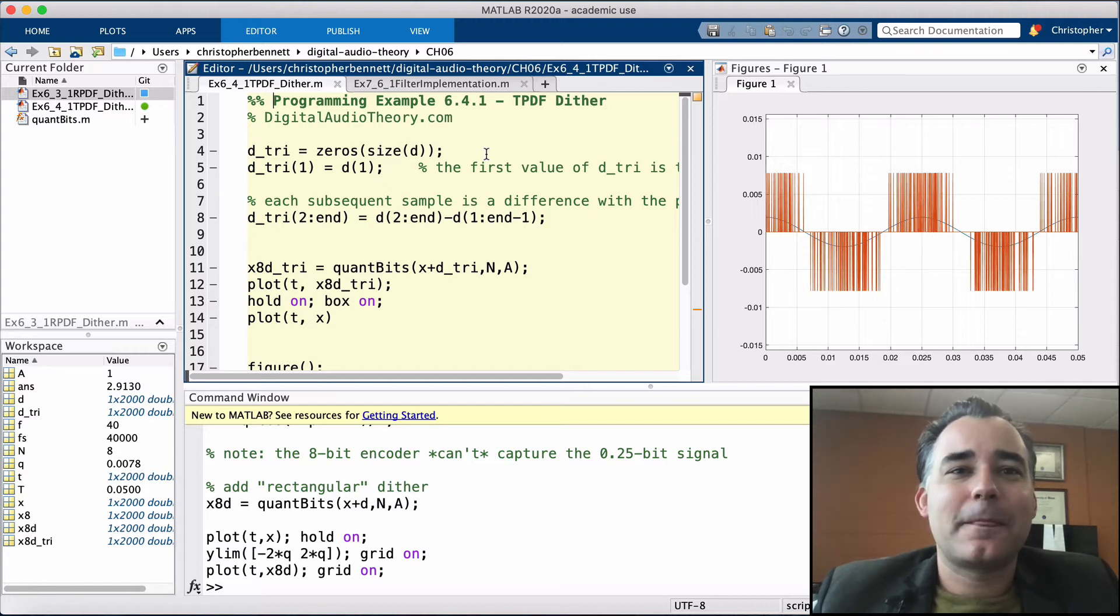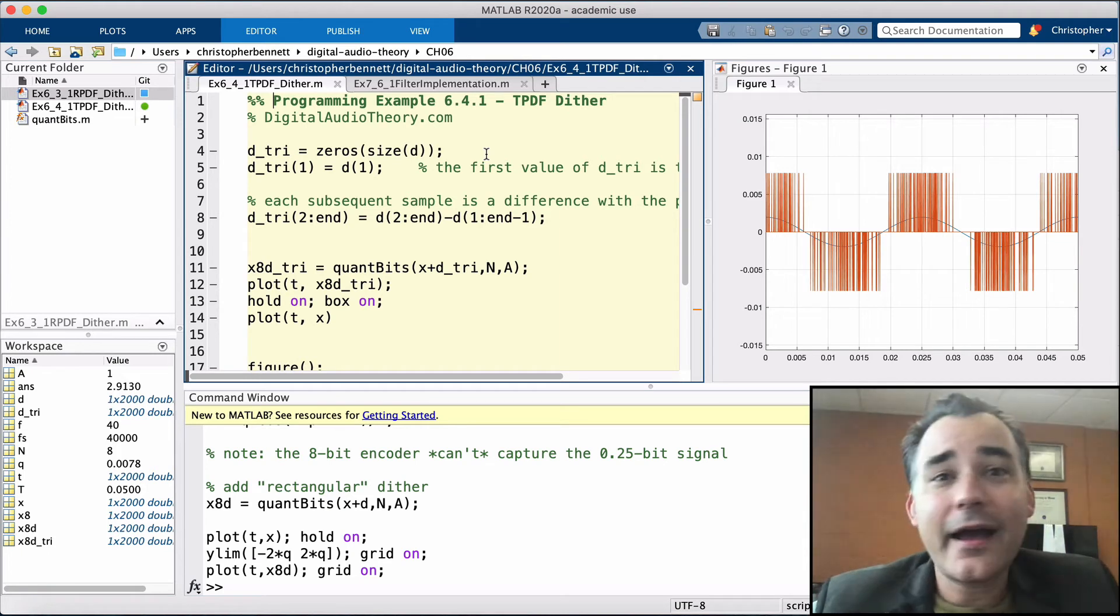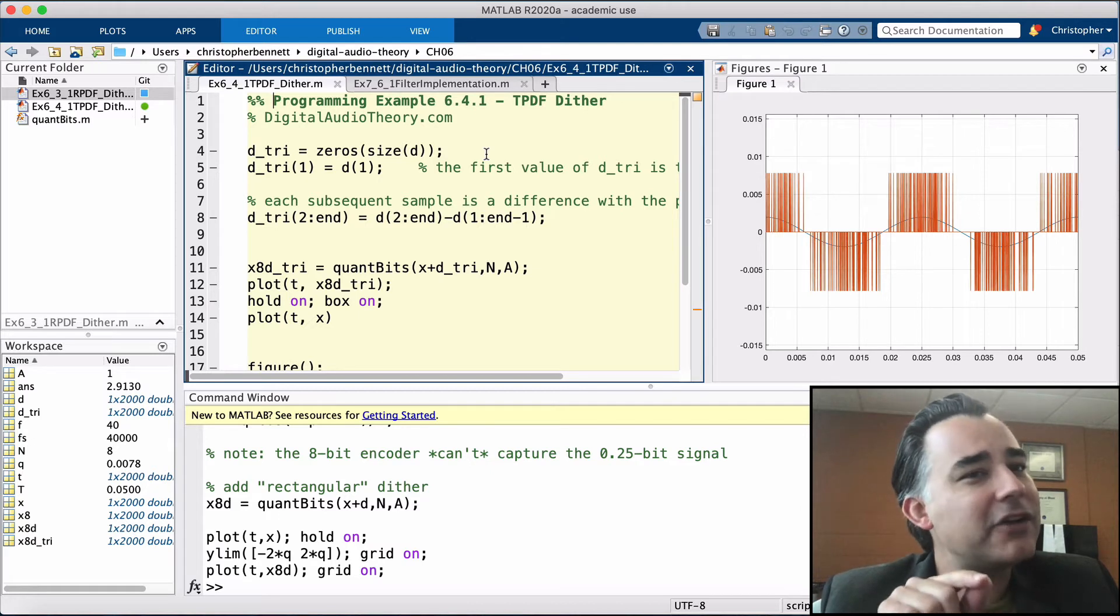So since the dither is completely randomly generated, then any subsequent value, one to the next, will be independent of its preceding value. So if we add or difference the dither signal with itself, with its previous value, then we can actually generate a TPDF signal this way. It's actually less complicated than it sounds.